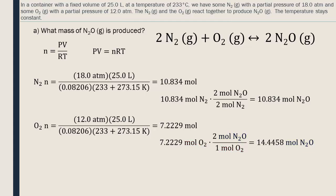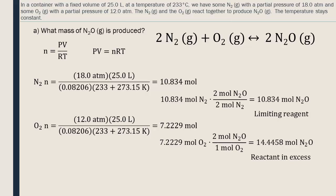So, even though we had fewer moles of oxygen as reactants, because of the stoichiometric ratios, it's actually the nitrogen that's our limiting reagent. We only have enough nitrogen to produce 10.834 moles of N2O, and the oxygen is in excess.